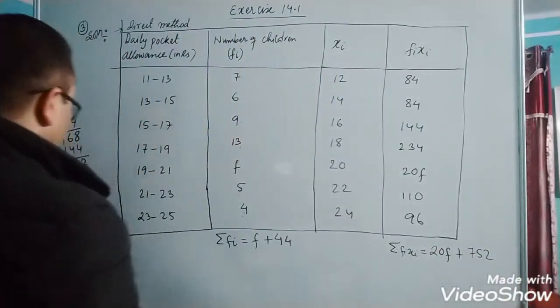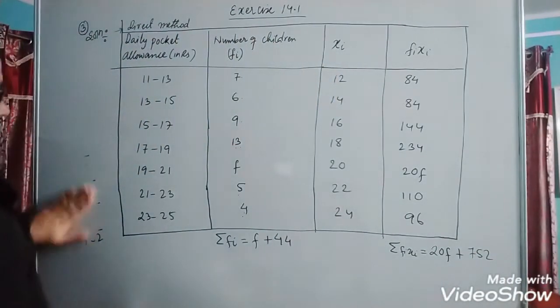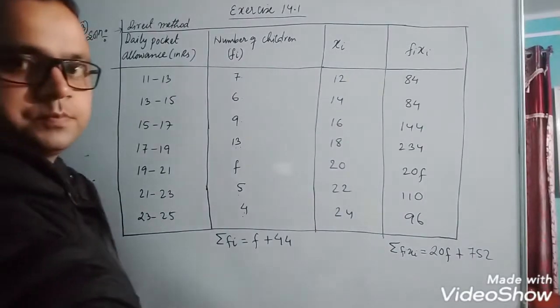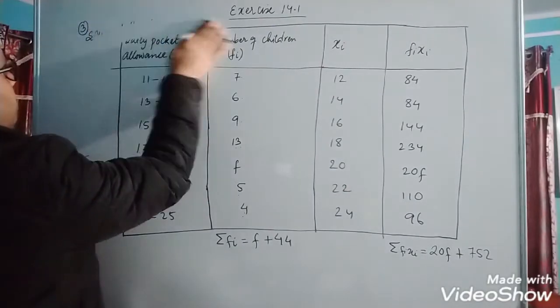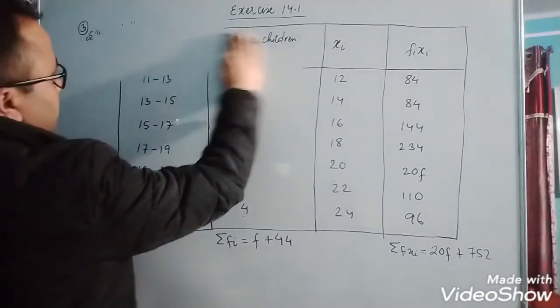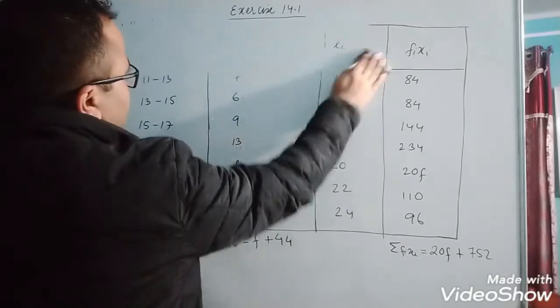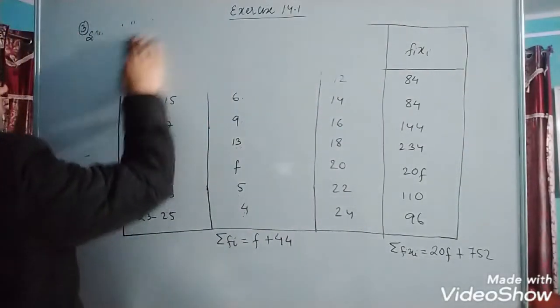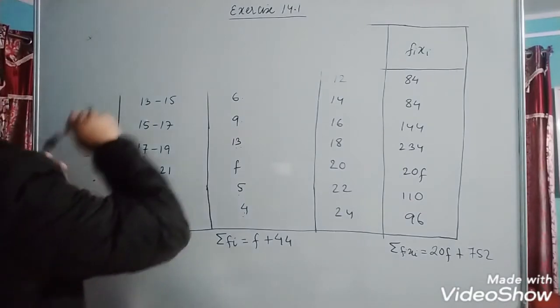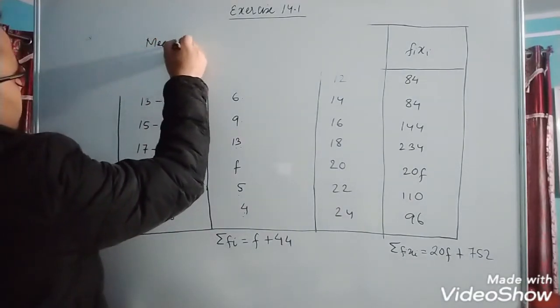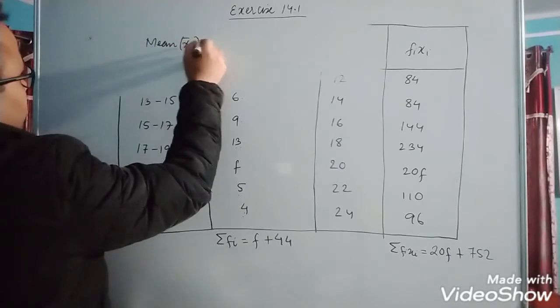Here mean is given. Mean pocket allowance is 18 rupees. Mean x bar equals 18.